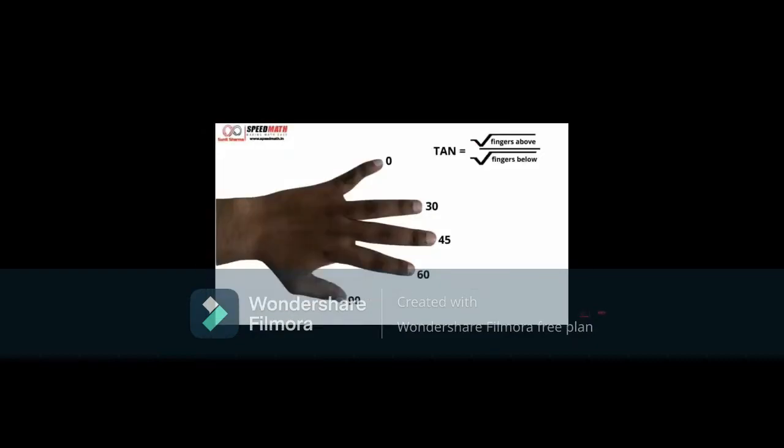Tan is very different from sine and cosine. For tan, we flip our hand. Observe the little finger is 0 degree, ring finger is 30 degree, middle finger is 45 degree, index finger is 60 degree and thumb is 90 degree. Now, the formula to find tan is root of fingers above by root of fingers below.